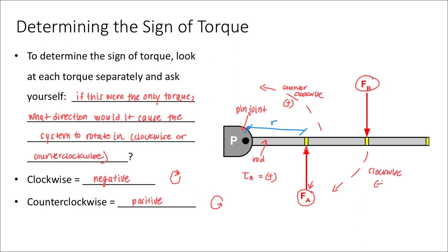So that's a negative direction. Therefore, the torque produced by force B is going to be negative, because that force would cause the system to rotate in the clockwise or negative direction.